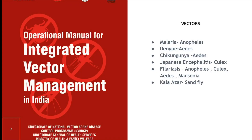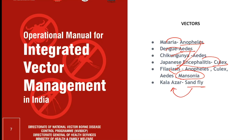The main vectors targeted by Integrated Vector Management in India under the National Vector Borne Disease Control Program include: Anopheles for malaria and filariasis; Aedes for chikungunya, dengue and filariasis; Culex for Japanese encephalitis and filariasis; Mansonia for filariasis; and Sandfly for kala-azar.